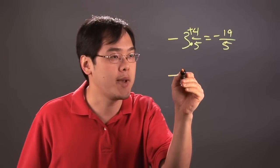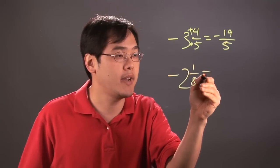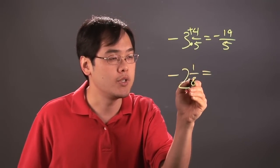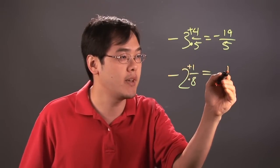Another quick example, if you have negative 2 and 1 eighths, same kind of idea, take the denominator, multiply by the whole number, so 8 times 2 is 16, and then you add the numerator, 16 plus 1 is going to be 17.